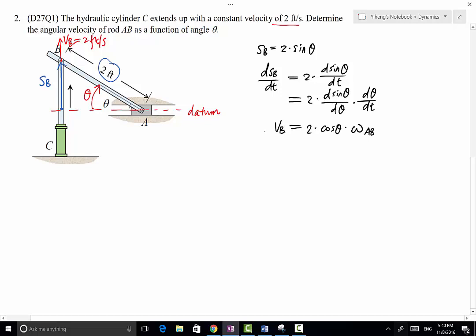V_B is a constant, 2. From here, we can solve for omega_AB as a function of theta, which equals 2V_B divided by 2 times cosine theta. Therefore, that equals 1 divided by cosine theta. If you want to say this is secant theta, that is fine as well.